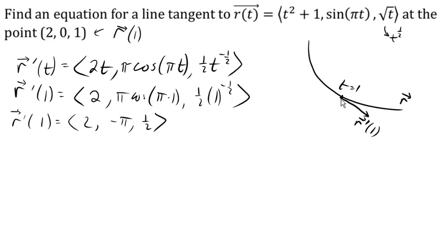Now, if we want the equation for the line that's tangent, you'll notice that that tangent vector can act as the direction vector of the line that we're looking for. So here is our tangent line. The first thing we need is a starting point, a point that our line passes through.